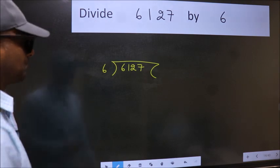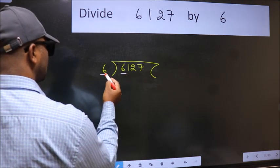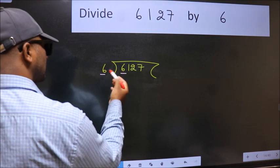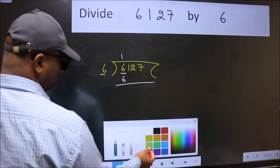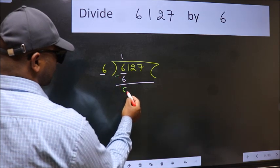Next, here we have 6 and here 6. When do we get 6 in 6 table? 6 once, 6. Now we should subtract. We get 0.